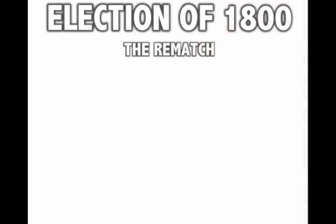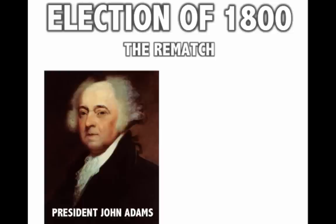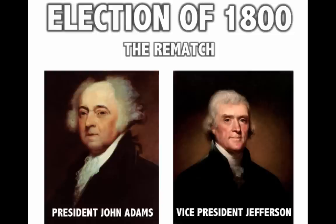Back to the election. 1800 — it's a rematch. Everyone loves rematches, because we have John Adams who won in 1796 running for a second term against Vice President Thomas Jefferson. The framers of the Constitution didn't anticipate political parties, and so whoever got the second most electoral votes became Vice President. That doesn't work when you have different political parties, which was the case in 1796. So in 1800, you had the VP running against the President.